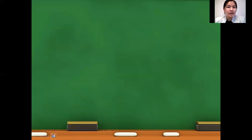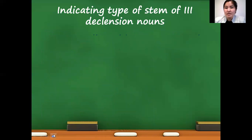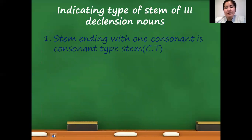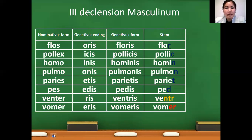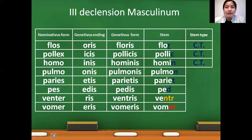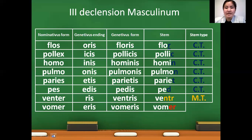After indicating the stem, we need to indicate the type of stem. There are three types: stems ending with one consonant are consonant type stems; stems ending with -al or -r are vowel type stems; and stems ending with two or more consonants are mixed type stems. Looking at the masculine stems: flor ends in one consonant r — consonant type. Same with pollic, homin, pulmon, and paret — all end in one consonant, so they are consonant type. But ventr ends in three consonants n, t, r — so it is mixed type. And vomer ending in r corresponds to vowel type stems.